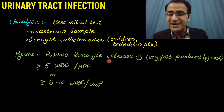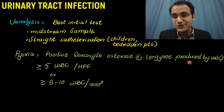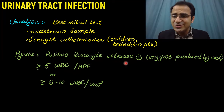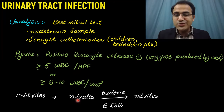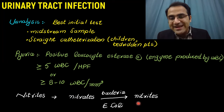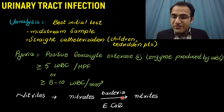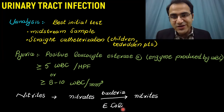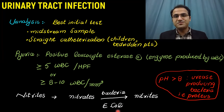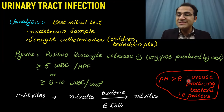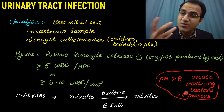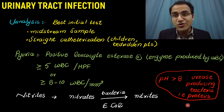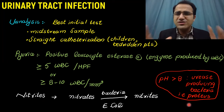The cutoff varies by source — some sources consider 2 or more pus cells diagnostic in males. Other than pyuria, the presence of leukocyte esterase, an enzyme produced by WBCs, is also diagnostic of UTI. Some bacteria convert nitrates in the urine to nitrites — mostly E. coli — so positive nitrites indicate E. coli infection. If urine pH is greater than 8, it indicates a urease-producing bacteria such as Proteus, making the urine alkaline.